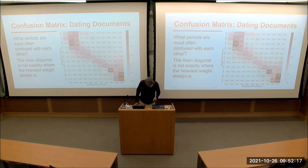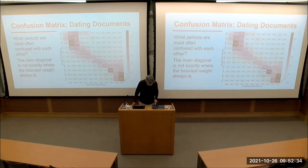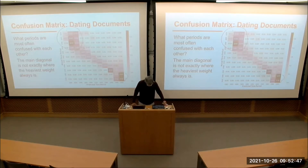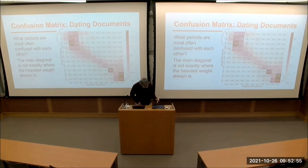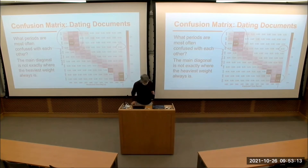Looking at this confusion matrix, more of the weight is along the main diagonal — which is what you'd like to see — but it's not perfect. There are mistakes being made: we're often confusing documents written in the 1980s with documents written in the 2000s, which is a relatively forgivable error. But we can see there are drifts — the classifier is less good in certain regions. A bad mistake would be a document written in the 1860s predicted as being from the 2000s. A confusion matrix gives you a very interpretable way to look at these things.